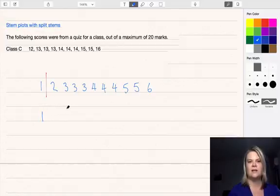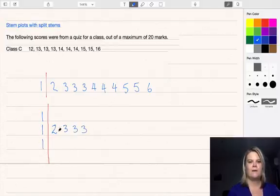Any tens and elevens would go in the first column. We don't have any we're starting at twelves. Then twelves and thirteens in the second row and we have a twelve, thirteen, thirteen, thirteen, twelve, thirteen, fourteens and fifteens in the next rows. So fourteen, fourteen, fourteen, two fifteens,